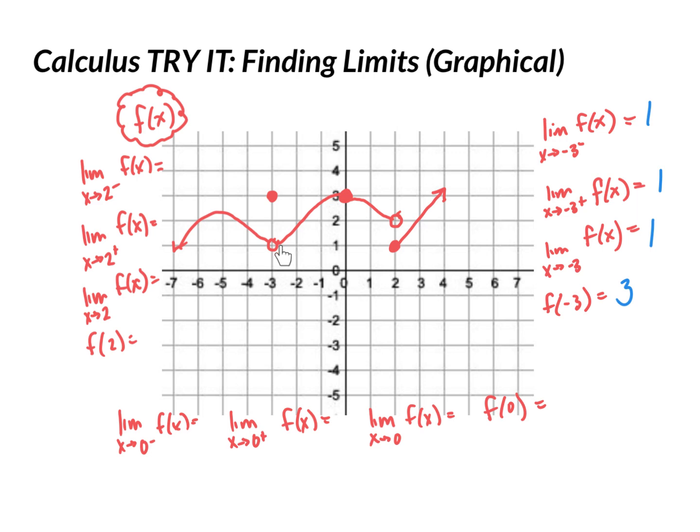Now, let's go to 0. As you approach 0 from the negative side, you're approaching a y value of 3. As you approach 0 from the positive side, you're also approaching a y value of 3, so the limit is 3, because you're approaching 3 from both sides. And you'll notice here that it's actually filled in right there.